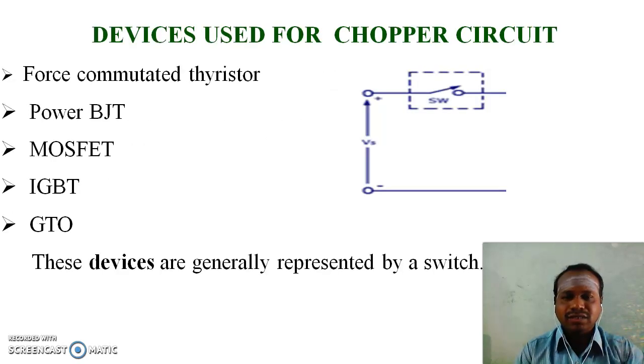Devices that are used for chopper circuits include force commutated thyristors, power BJT, MOSFET, IGBT, and GTO.